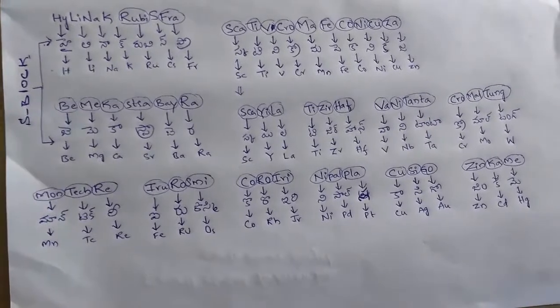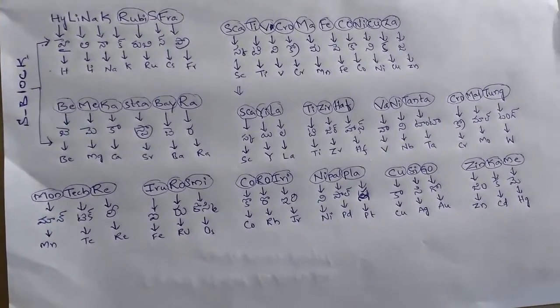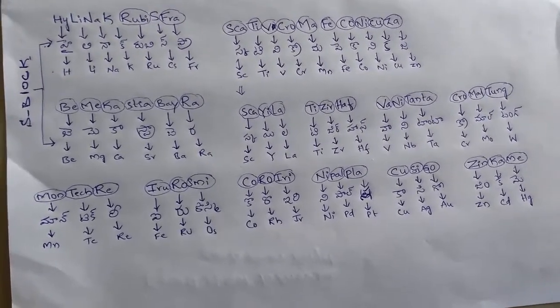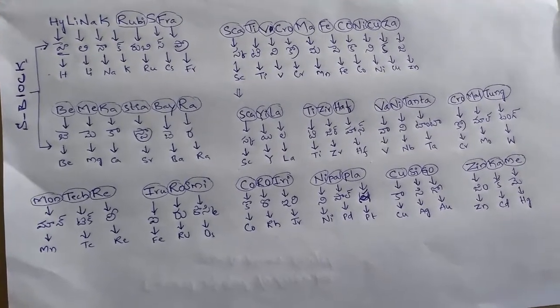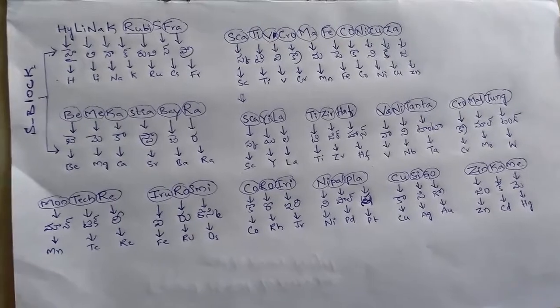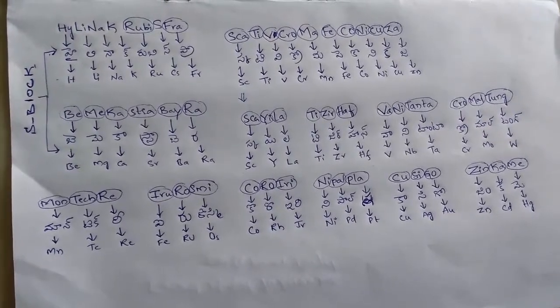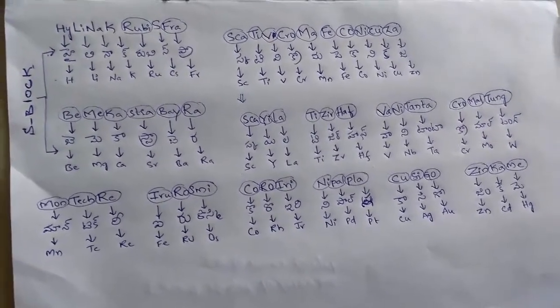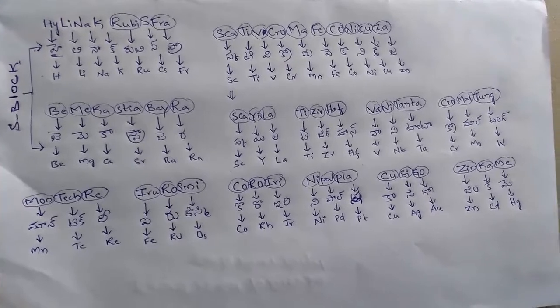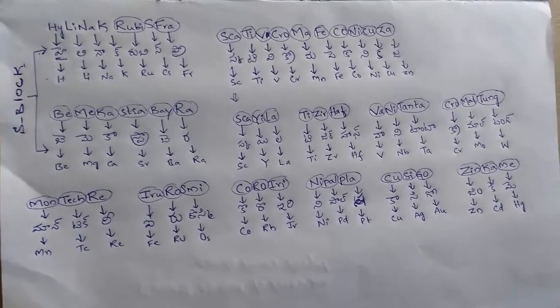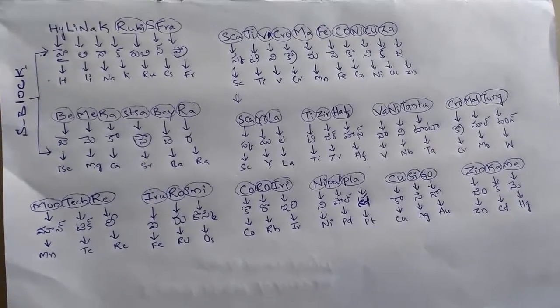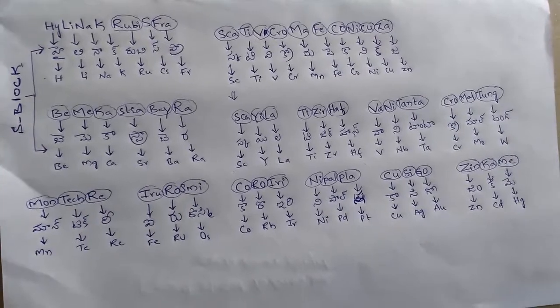Once you look at first, it is very difficult to you, but if you practice, practice more and more, and if you look how I am pronouncing it, so it will be easy for you. Just here, how I can pronounce it: Scatific chroma fekanikiza, Bemeka strawberry, Hyalina grubisphra, Skylar, Tizidhav, Vanitanta, Chromaltang, Montecree, Iterosmi, Coroiri, Nipalpla, Kasi go, Zinc me. Like this, if you practice more and more, it is very easy to remember this.